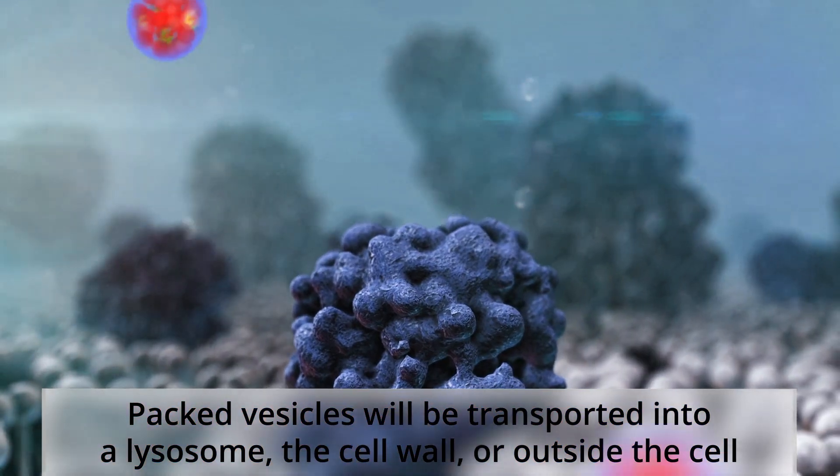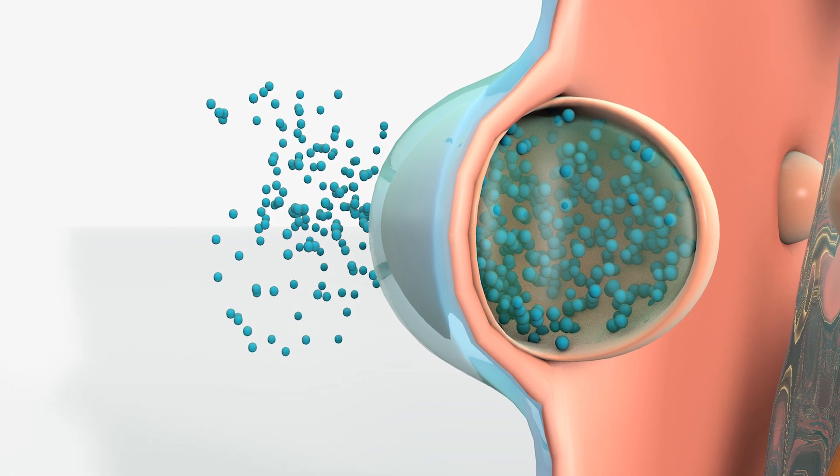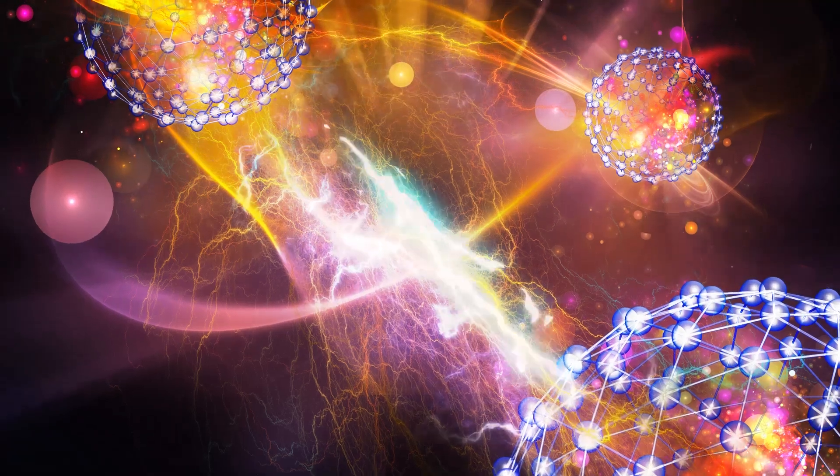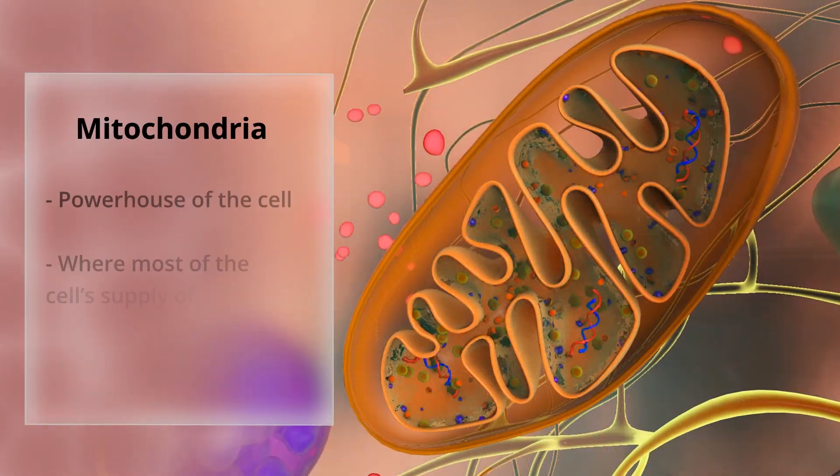When a vesicle is secreted from the cell, it fuses with the plasma membrane and releases its content in a regulated burst. All of these complex molecular processes require energy.